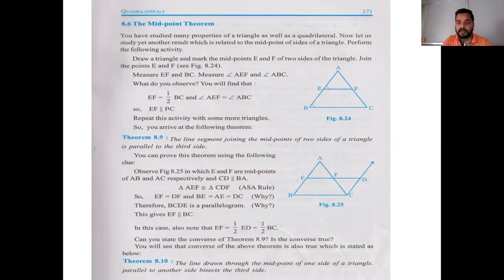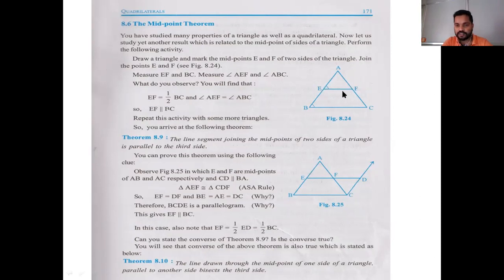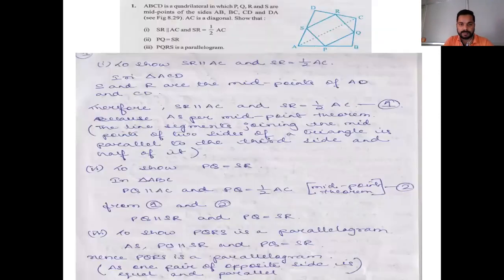Theorem 8.9 says: if two midpoints of a triangle are joined, that line will be parallel to the third side. The reverse, Theorem 8.10, says: if in triangle ABC, E is a midpoint and EF is parallel to BC, then F will also be the midpoint of AC. Now we shall start question number one.